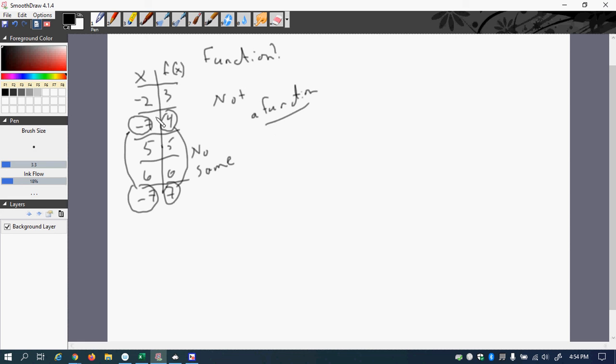So the rule is, if you see an x repeating itself, then it better have the same y output. Like, let's make one that is a function. Let's say that you have f of x, and let's say it's the same numbers, negative 2, negative 7, 5, 6. If I said it was 3, 4, 5, 6, and then I said this was 4, is this a function?